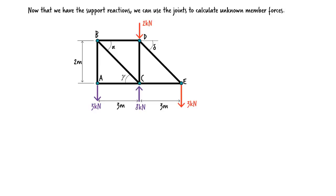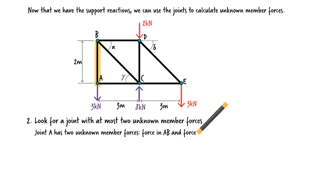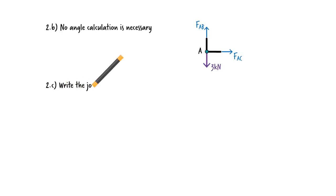Now that we have the support reactions, we can use the truss joints to calculate member forces. We start by identifying a joint with at most two unknown member forces. Joint A has two unknown forces, the force in member AB and the force in member AC. Let's draw the joint's free body diagram. We need to write two joint equilibrium equations.